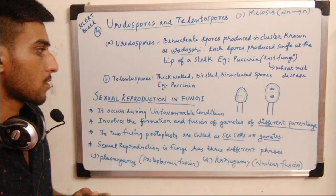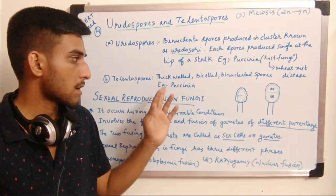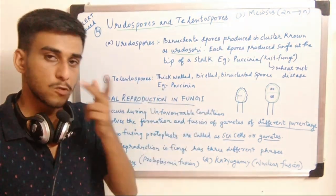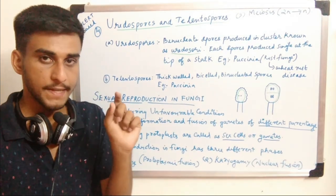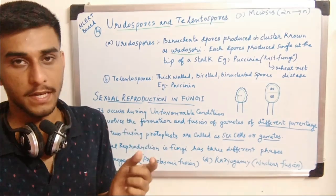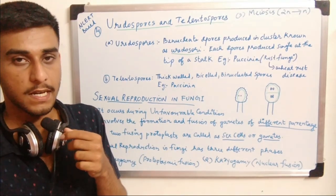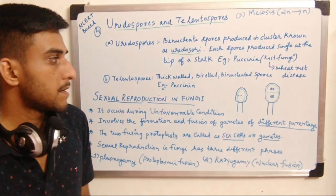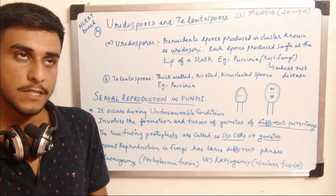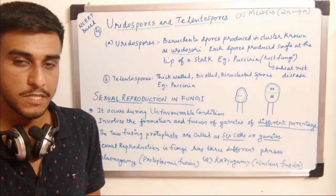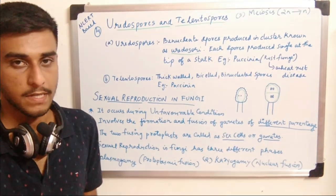Teleutospores are thick-walled, bicelled — meaning two cells per spore — and each cell contains two nuclei — binucleate in structure. There is a terminology known as dikaryon: dikaryotic means a condition in which an intermediate two-nuclei cell is produced, where both nuclei are haploid — we will discuss this in detail in sexual reproduction.